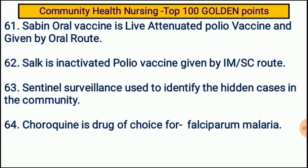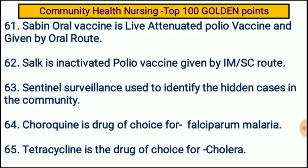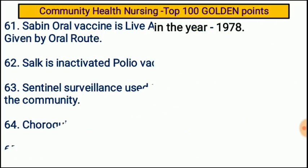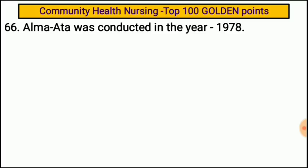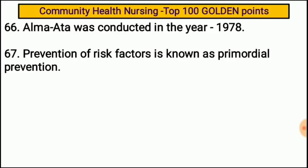Chloroquine is the drug of choice for falciparum malaria. Tetracycline is the drug of choice for cholera. Alma Ata conference was conducted in the year 1978. Prevention of risk factors is known as primordial prevention.